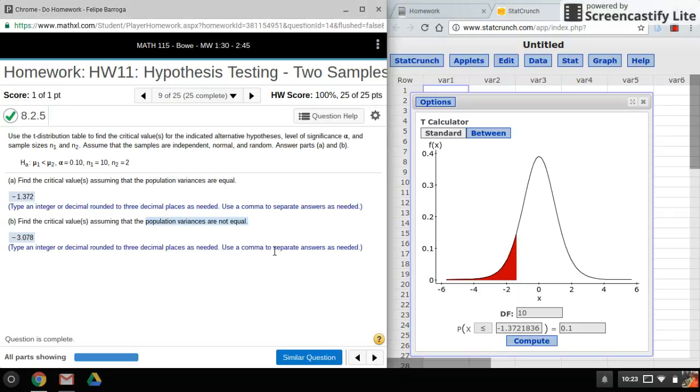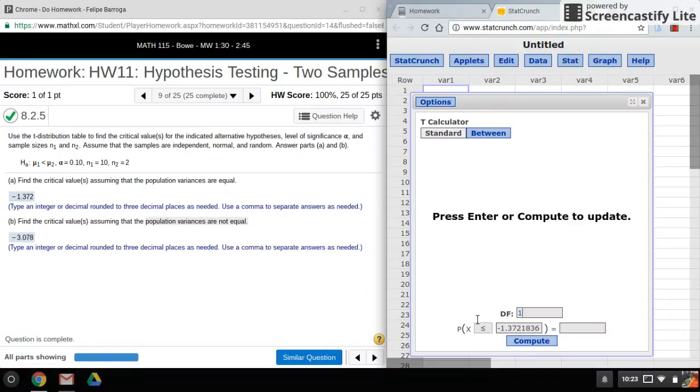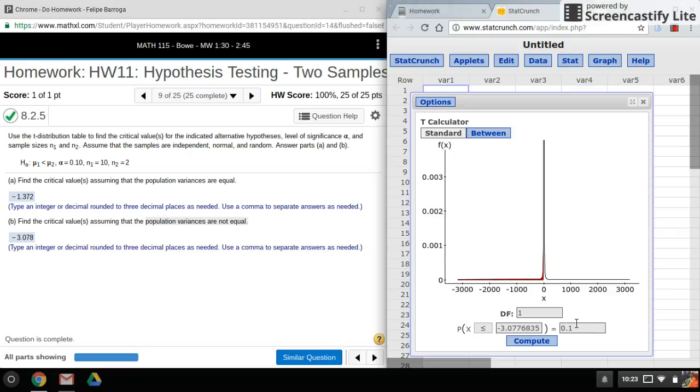If the population variances are not equal, I'll take the smaller of my two sample sizes and subtract one. This one is the smaller one, I'll do that minus one and that'll give me one degree of freedom. Again, because it's only one tail, I'll put in alpha and hit compute, and there's my critical value. That's it, it's that simple.